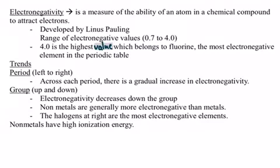The elements that have the lowest electronegative value of 0.7 are francium, a metal. Electronegativity also has a pattern, just like all the others you've seen before with atomic radius and ionization energy.